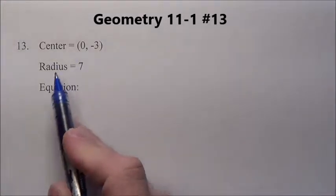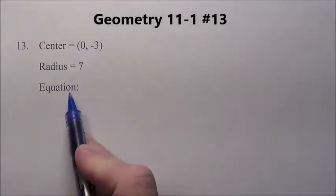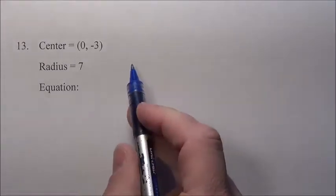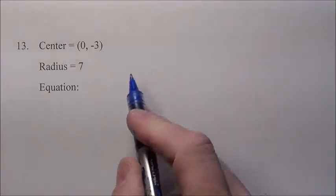Problem 13. It has a center at 0, -3 with a radius of 7. We want the equation of this circle, so you go over 0, -3 and then everything has a radius of 7 coming out.